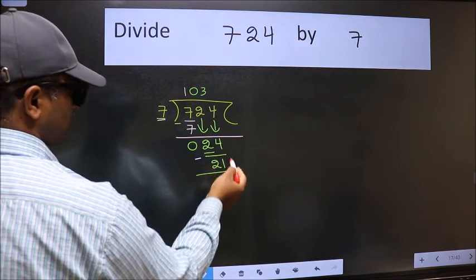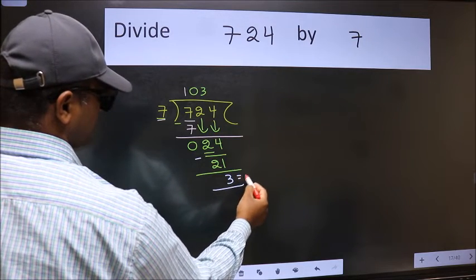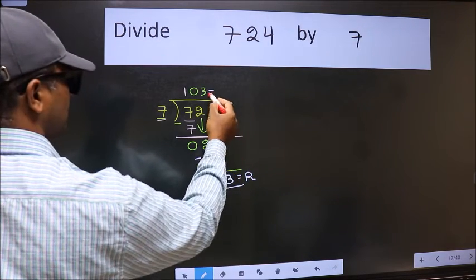No more numbers to bring down. So we stop here. This is our remainder and this is our quotient.